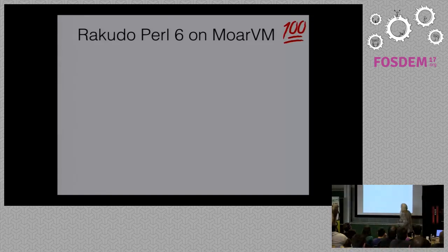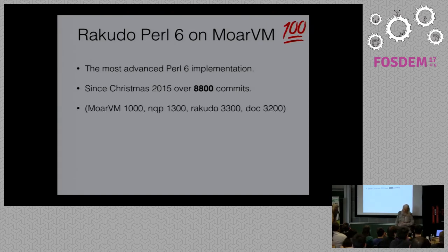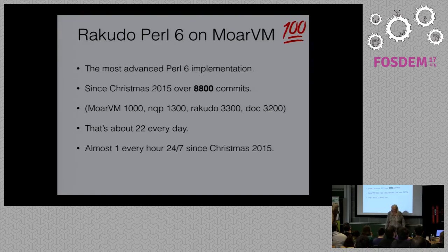We're talking about Rakudo Perl 6 on MoarVM — this is, of course, the most advanced Perl 6 implementation that we have. Since Christmas we have had over 8,800 commits: about 1,000 for MoarVM, about 1,300 for NQP, about 3,300 for Rakudo, and for the documentation also about 3,200. That's about 22 every single day since Christmas — almost one every hour.